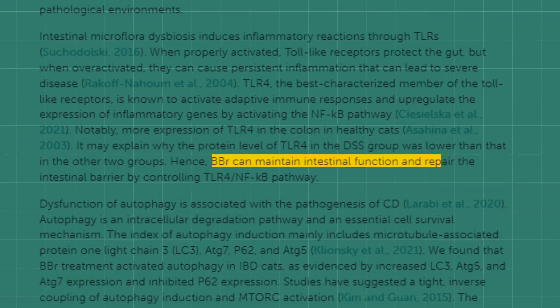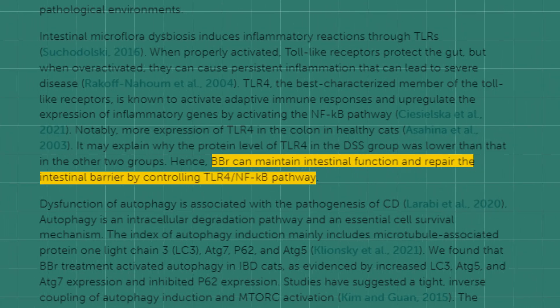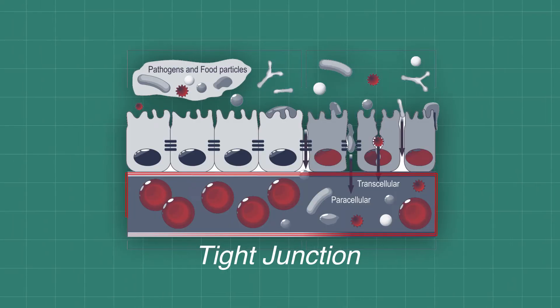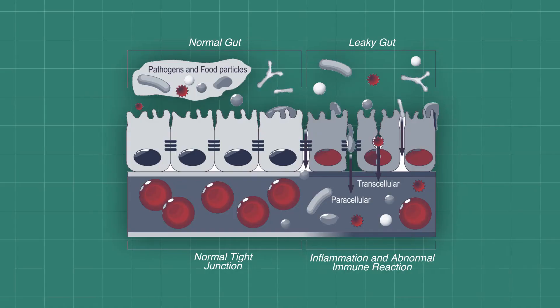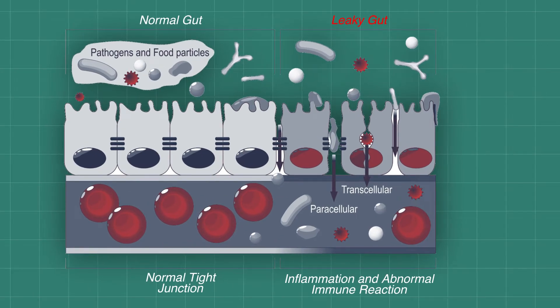Intestinal barrier function enhancement is another important function of berberine. It helps maintain intestinal barrier integrity by strengthening tight junctions between epithelial cells lining the gut lumen. By preventing the leakage of harmful substances and pathogens from the gut lumen into the bloodstream, berberine effectively reduces intestinal permeability — preventing leaky gut syndrome — and lowers the risk of systemic inflammation and immune activation.